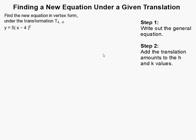How to find a new equation under a given translation. This says find the new equation in vertex form under the transformation T(4, -3). A lot of students get this confused. A transformation is just when you have a change, and there's different types of changes. A translation is one change.